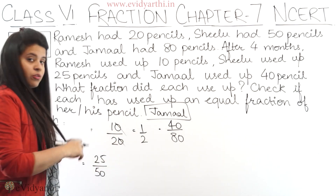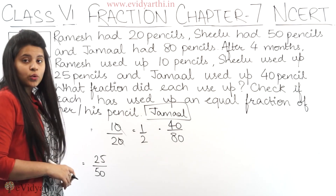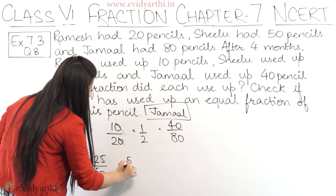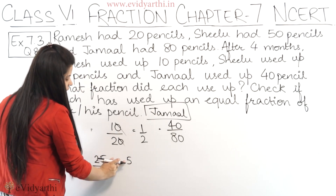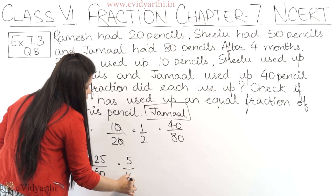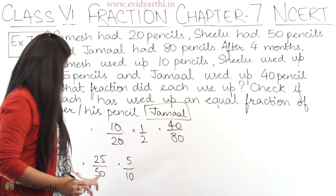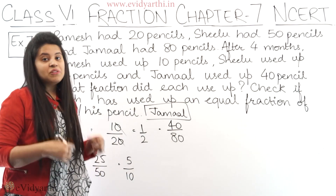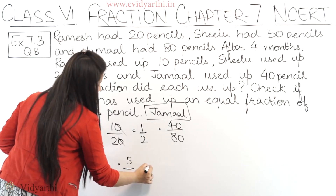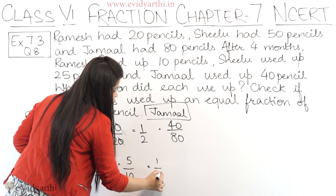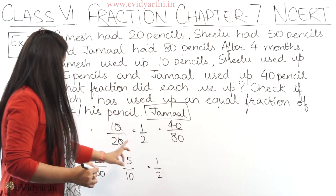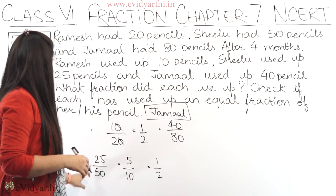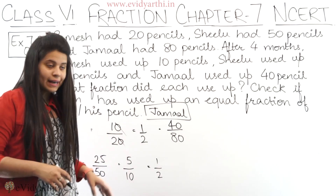Next we have 25 upon 50. Both 25 and 50 are in the 5 times table. So we write 25 as 5 × 5 and 50 as 5 × 10. Then 5 and 10 are again in the 5 times table: 5 × 1 = 5 and 5 × 2 = 10. So the simplified fraction is 1 upon 2. This means 25 upon 50 is equivalent to 1 upon 2.